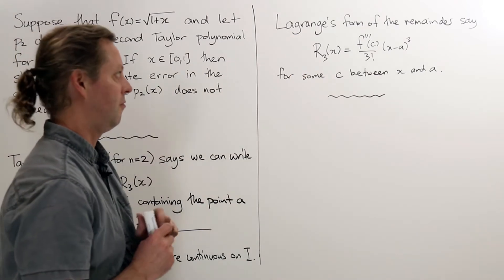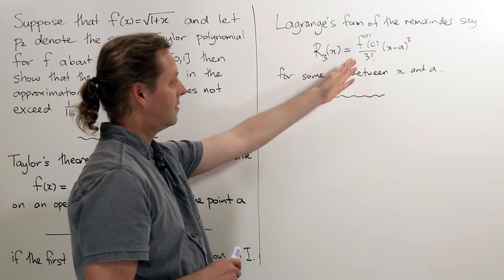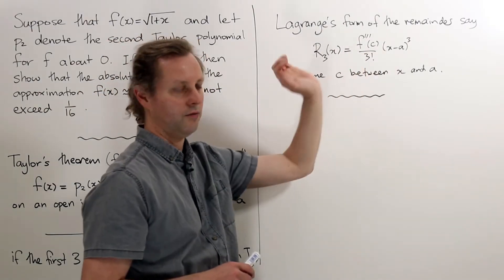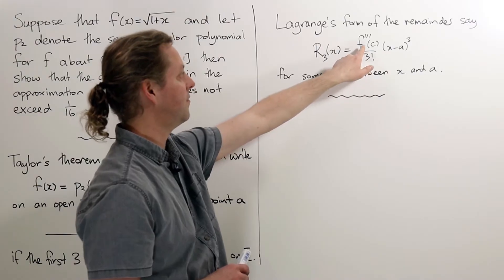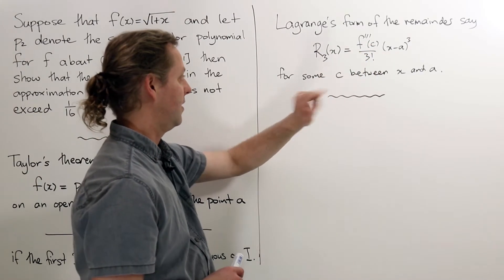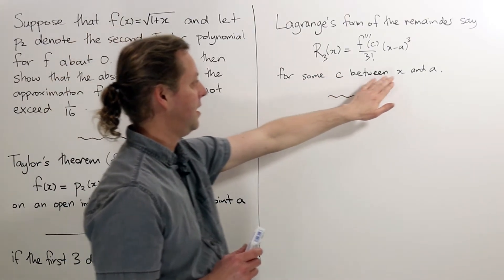It's Lagrange's form of the remainder, and Lagrange's form says that this r3(x) can be written as something times (x minus a) cubed, and that something is the third derivative of f evaluated at c divided by 3 factorial, and c is just some point we don't necessarily know where, between x and a.